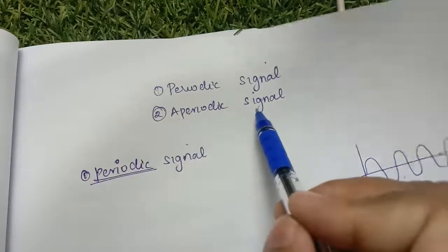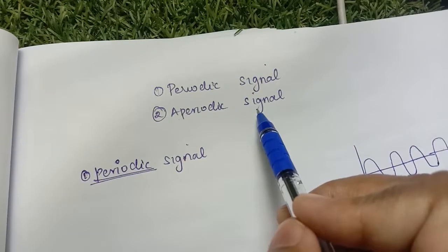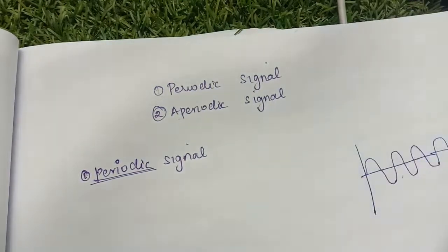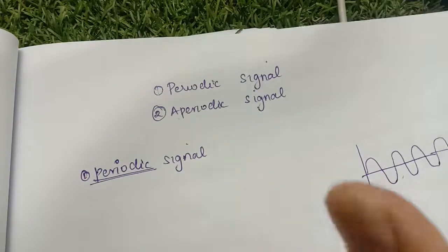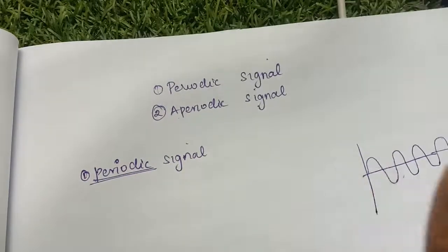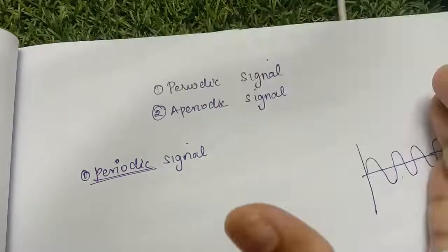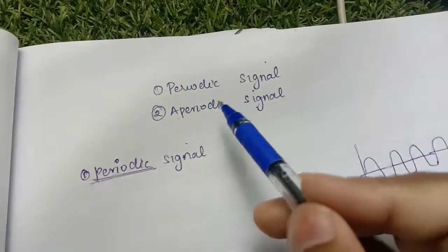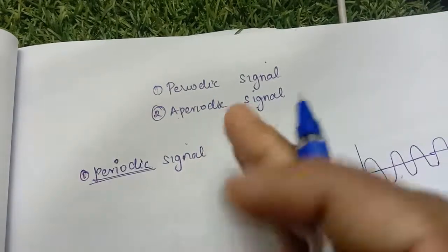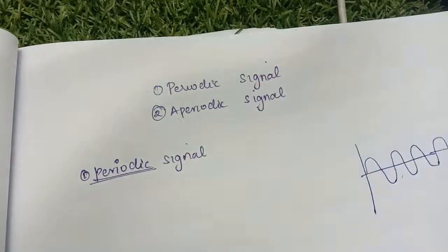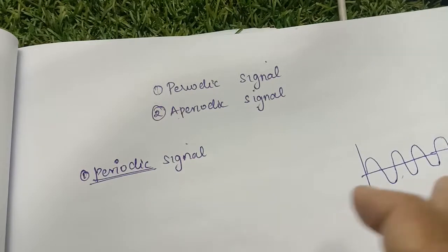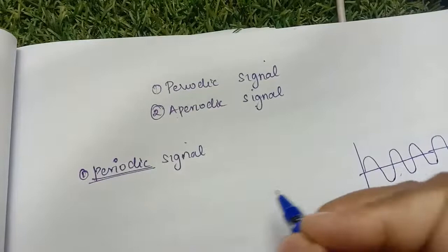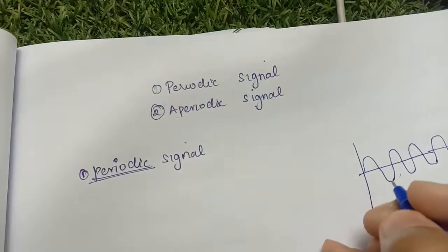An aperiodic signal does not have the same interval of time — it will have a different interval of time. So this is called an aperiodic signal. To summarize: a periodic signal has a repeated time interval for all the signals, but in the case of an aperiodic signal there won't be a repeated time interval.